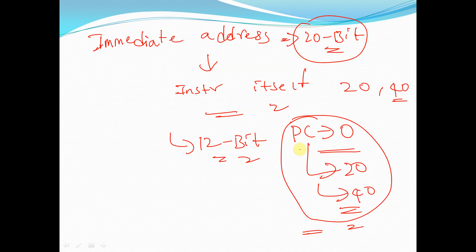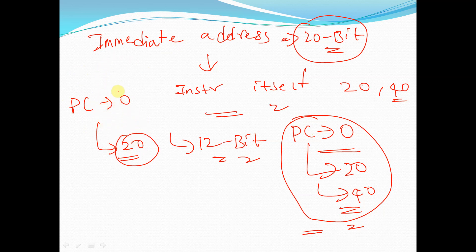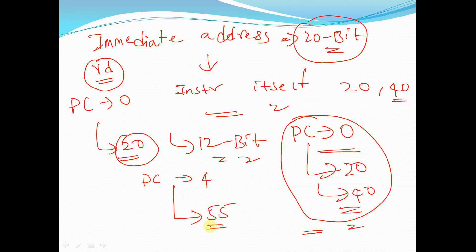JAL jumps to a target address and stores the return address in the destination register Rd. For example, if the program counter is jumping from address 0 to address 20, the address 20 is given in the instruction itself. If the program counter is at address 4 and jumps to address 55, the return address 4 is stored in Rd, so that in the future the program can return to that address using the Rd register.